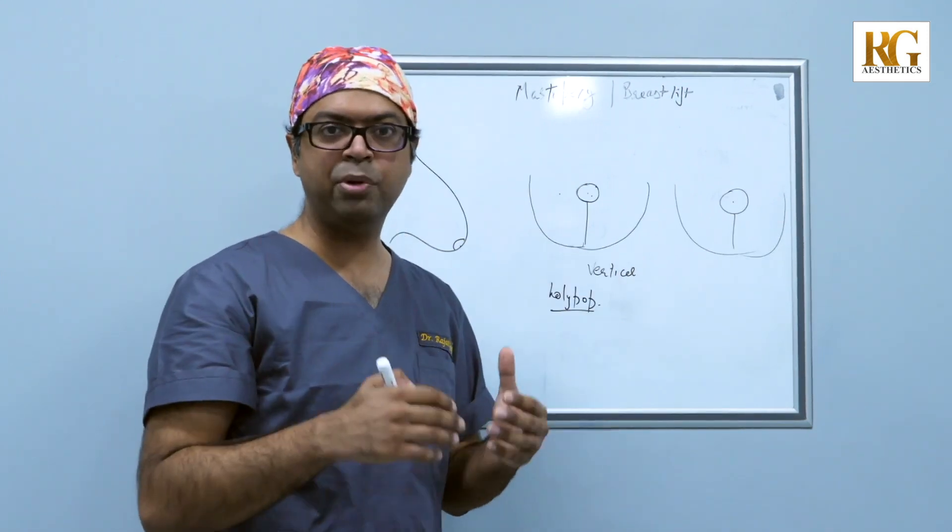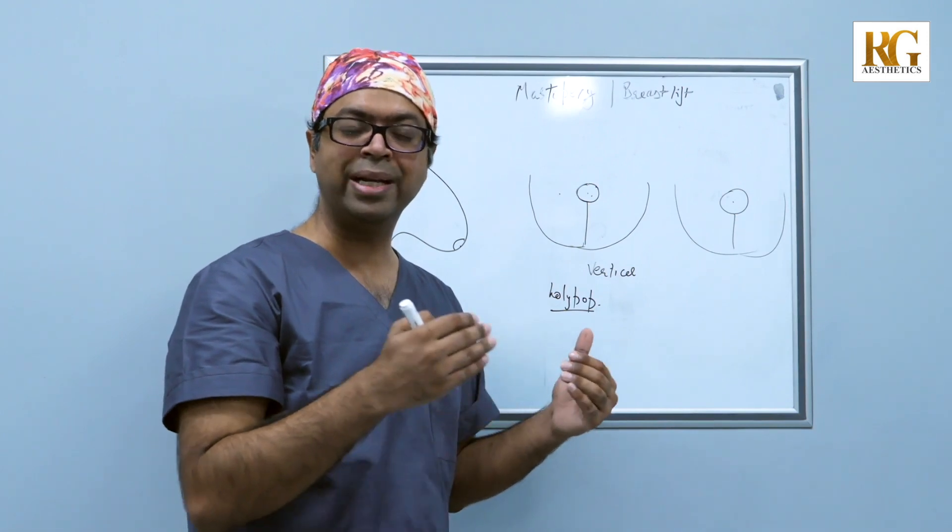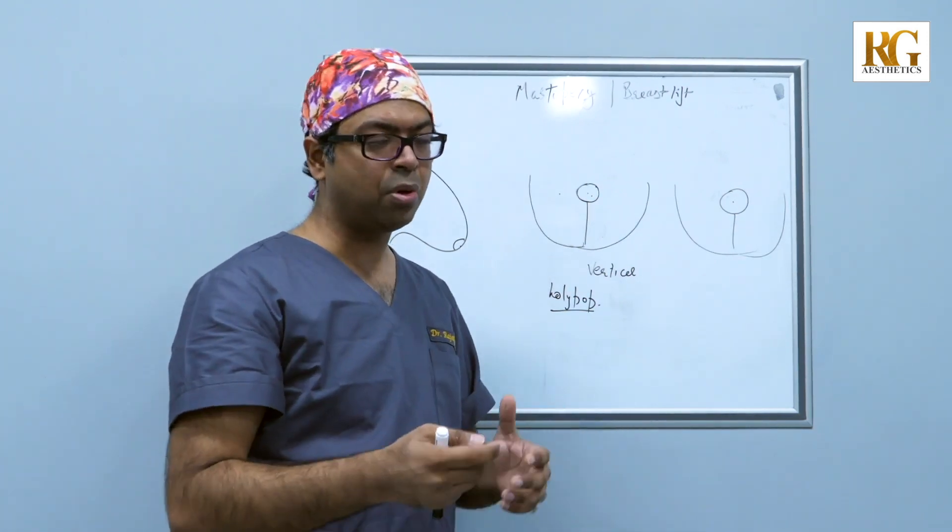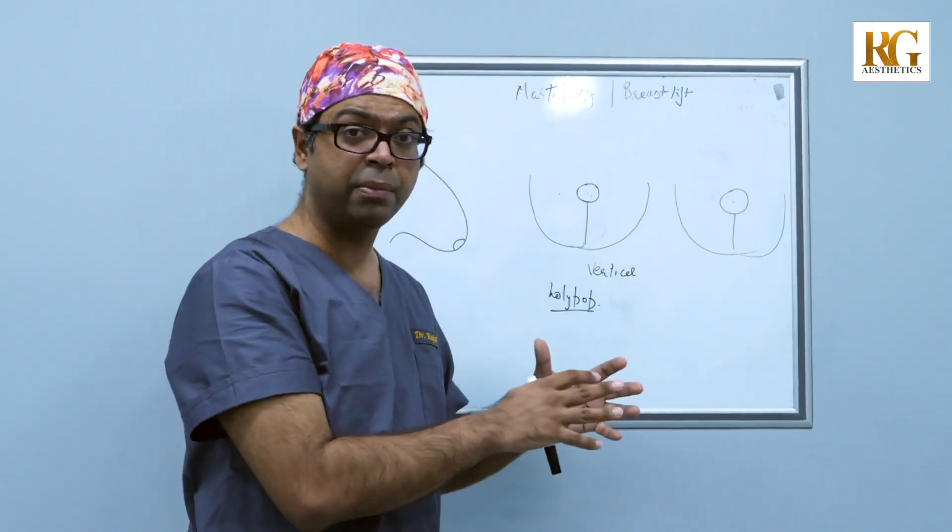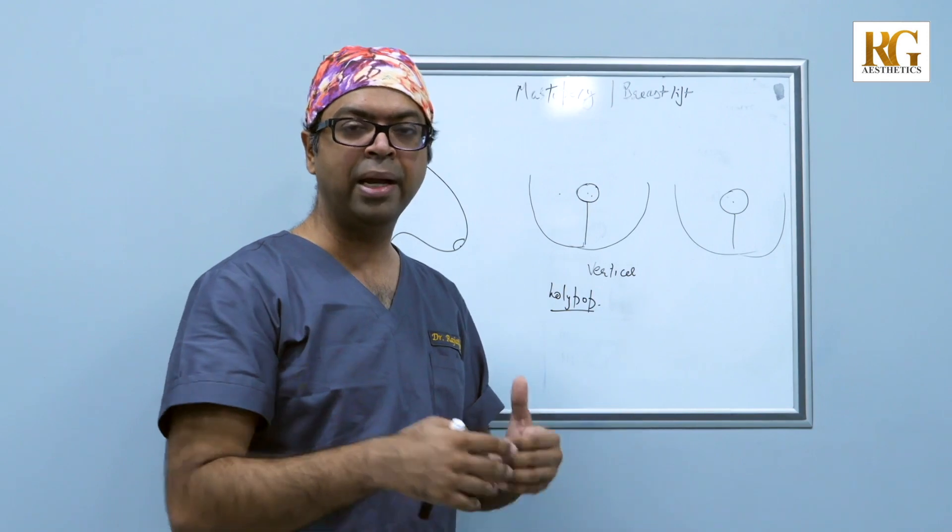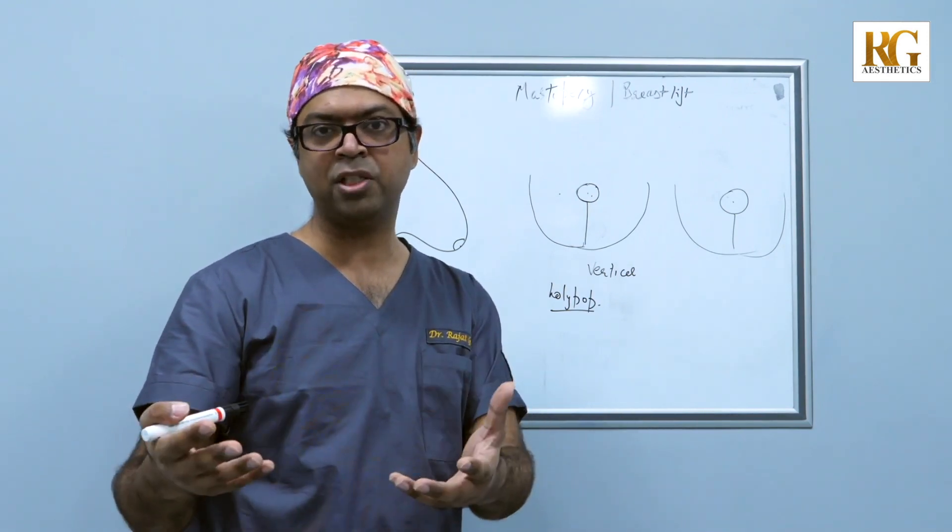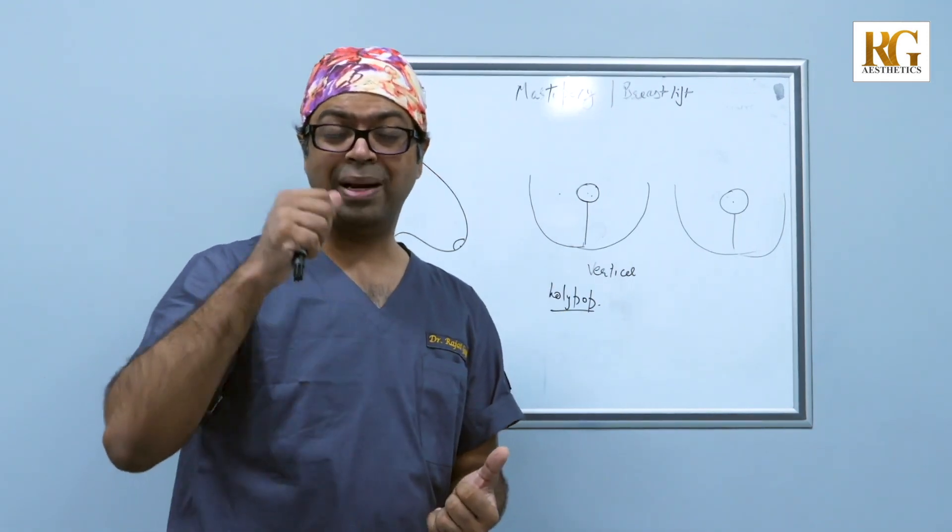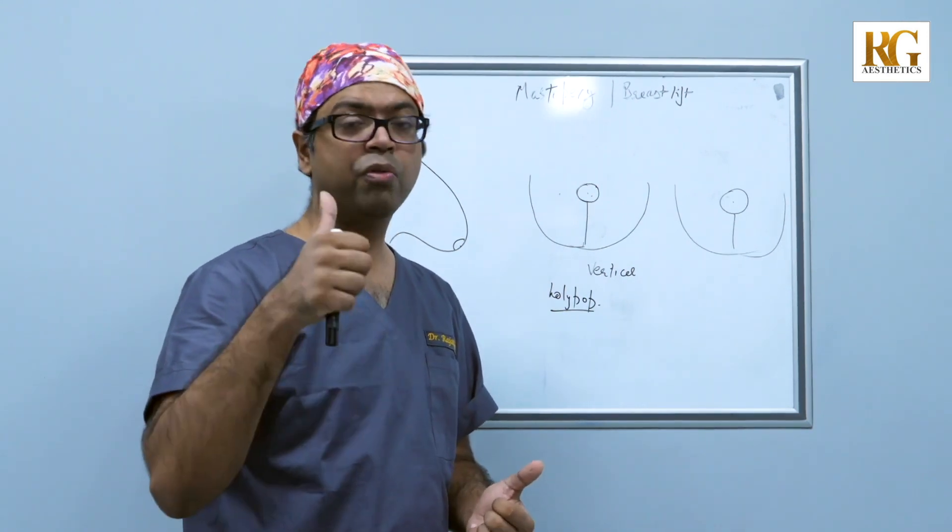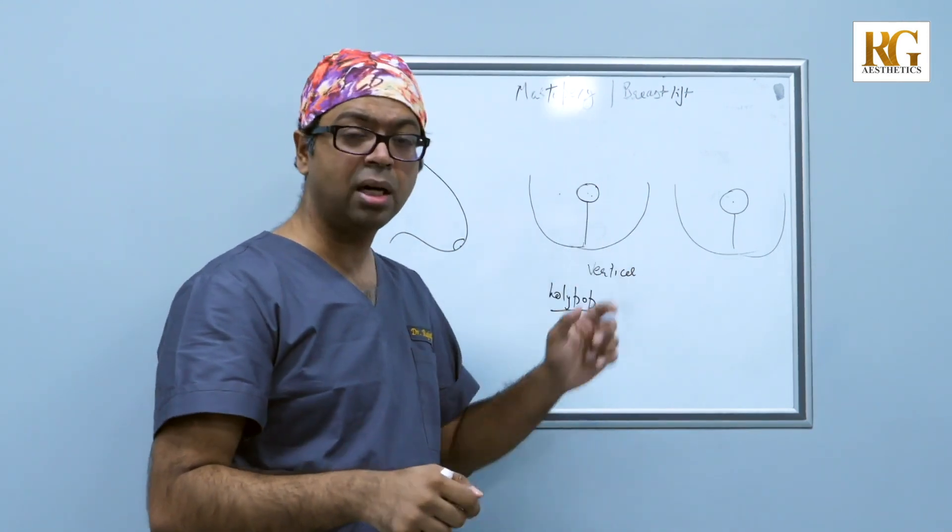This was my attempt to explain you what a breast sagging surgery entails. They can go for a reduction in size at the same time, or maintenance of the same size of the breast, or they can also go for an increase in size as we learned by going for either an implant or fat transfer at the same time. But a sagging breast always needs a breast lift. Don't forget that. And these are the scars you're going to get.